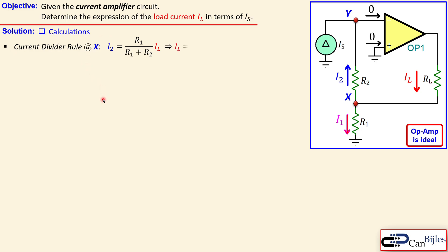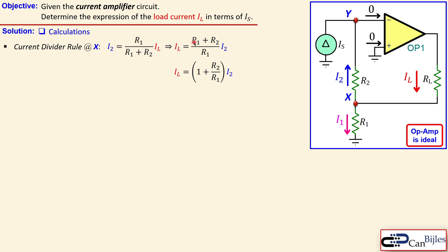Now we can rewrite this to obtain an expression for the load current IL. We divide the equation to isolate IL — equivalently, we multiply both sides by (R1 + R2) and then divide by R1 — which gives us IL. This can also be written as: R1/R1 is 1 and R2/R1 gives this part.